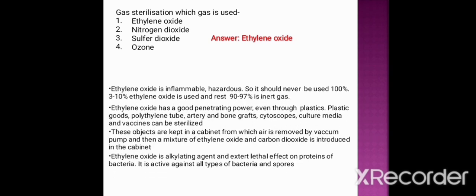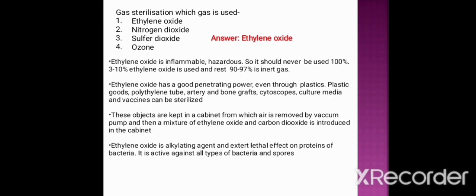Next question on gas sterilization: which gas is used? Option one: ethylene oxide. Option two: nitrogen dioxide. Option three: sulfur dioxide. Option four: ozone. The correct option is ethylene oxide. Ethylene oxide is highly inflammable and hazardous, so it should never be used at 100%; 3 to 10% ethylene oxide mixed with 90 to 97% inert gas is used. It has good penetrating power even through plastic. Plastic goods, polyethylene tubes, artery and bone grafts, cystoscopes, culture media, and vaccines can be sterilized by ethylene oxide gas sterilization. Objects are kept in a chamber from which air is removed by vacuum pump, then a mixture of ethylene oxide and carbon dioxide is introduced. Ethylene oxide is an alkylating agent and exerts its lethal effect on proteins; it is active against both bacteria and spores.